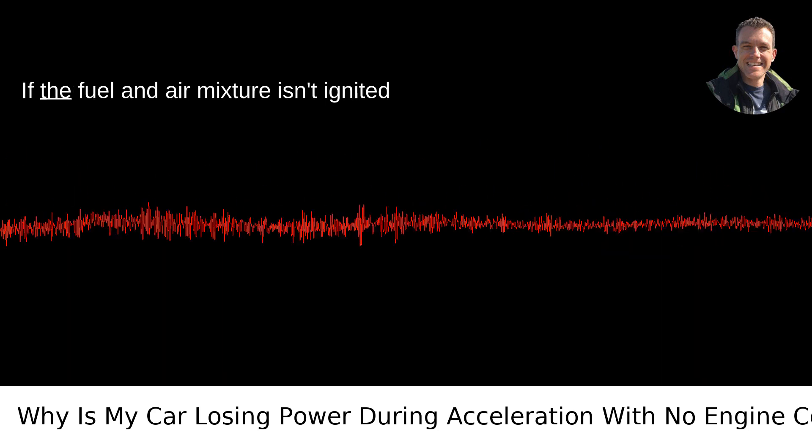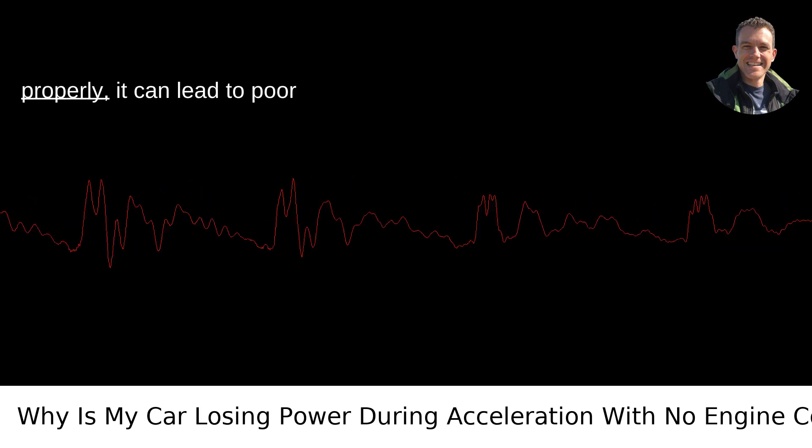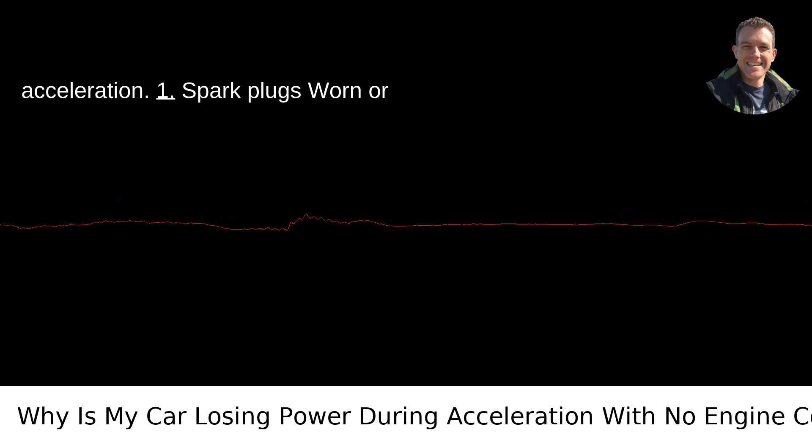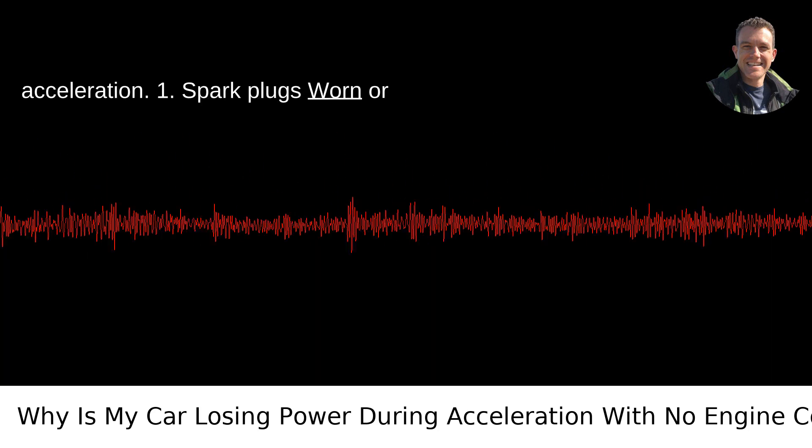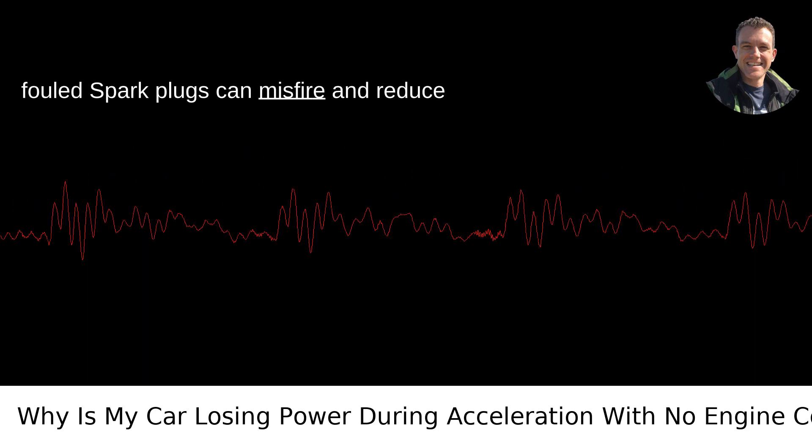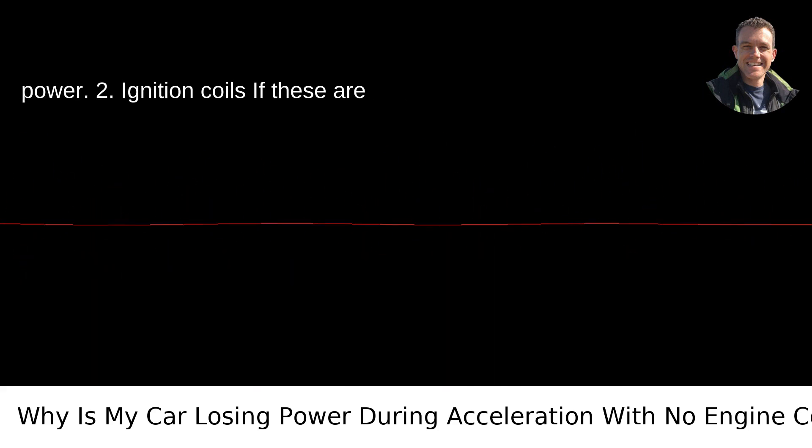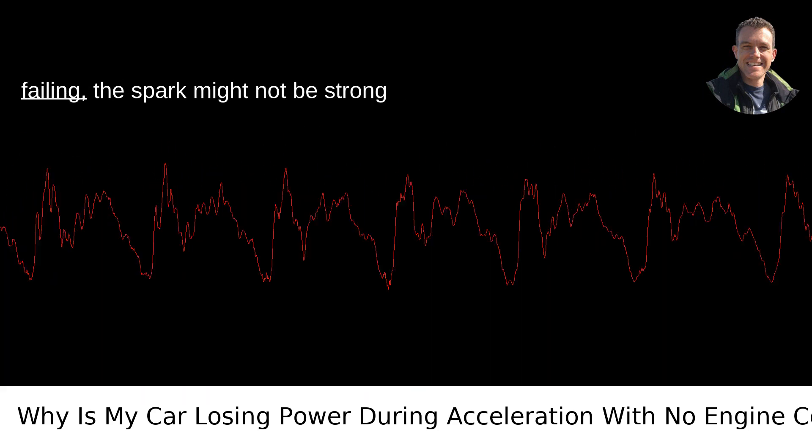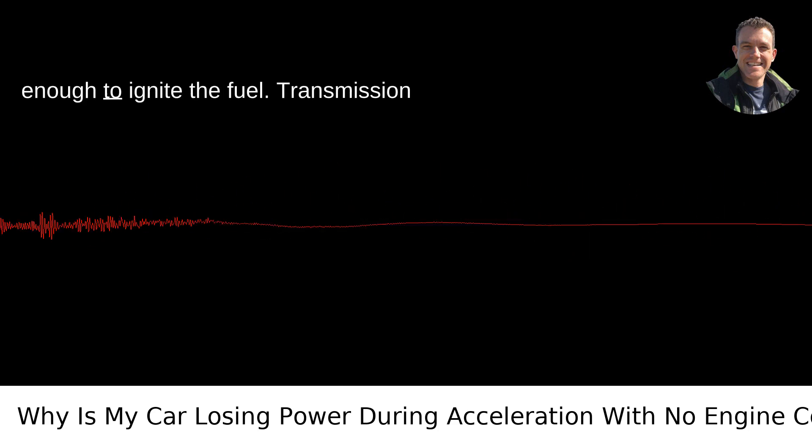Ignition system. If the fuel and air mixture isn't ignited properly, it can lead to poor acceleration. 1. Spark plugs. Worn or fouled spark plugs can misfire and reduce power. 2. Ignition coils. If these are failing, the spark might not be strong enough to ignite the fuel.